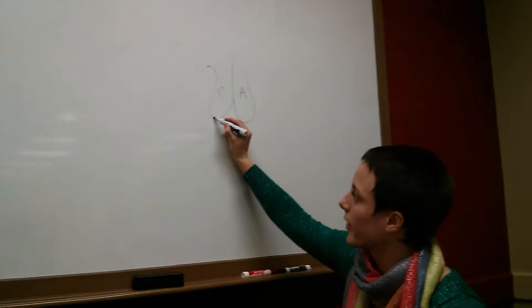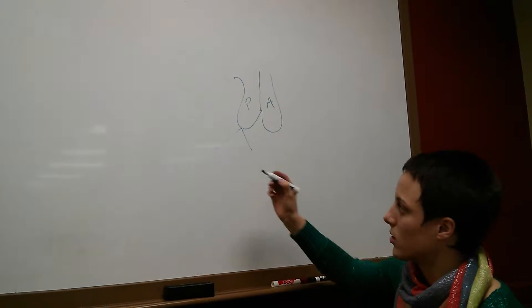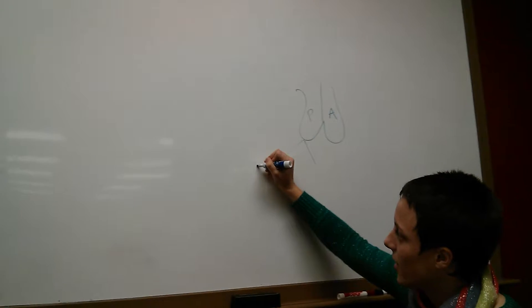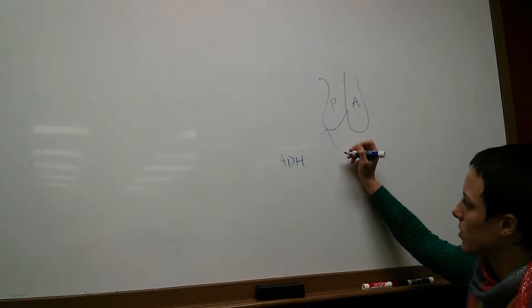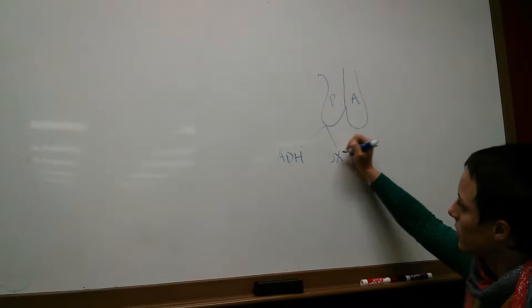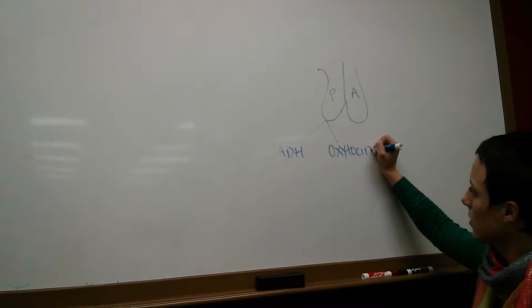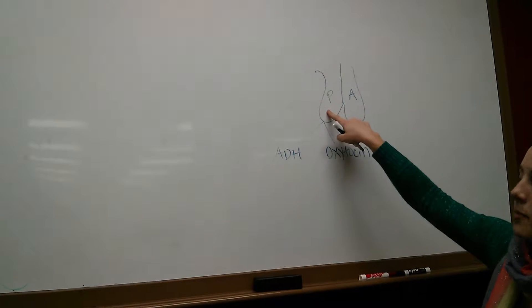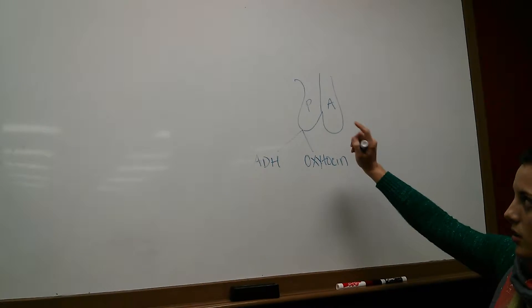The posterior pituitary gland secretes two different types of chemicals. One is called ADH. Is this dark enough to read? Yeah. And the other one is called oxytocin. These two are secreted by the posterior. Now, there's way more that is secreted by the anterior, but right now we're focusing on the posterior.